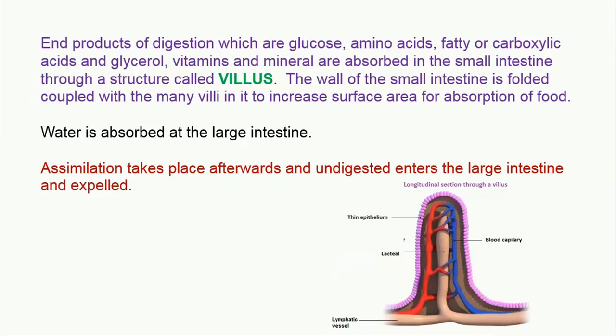Water is absorbed at the large intestine. Assimilation — meaning the cells being able to use the digested food — takes place afterward. Undigested food enters into the large intestine and is expelled. Here is an image showing a longitudinal section through a villus.